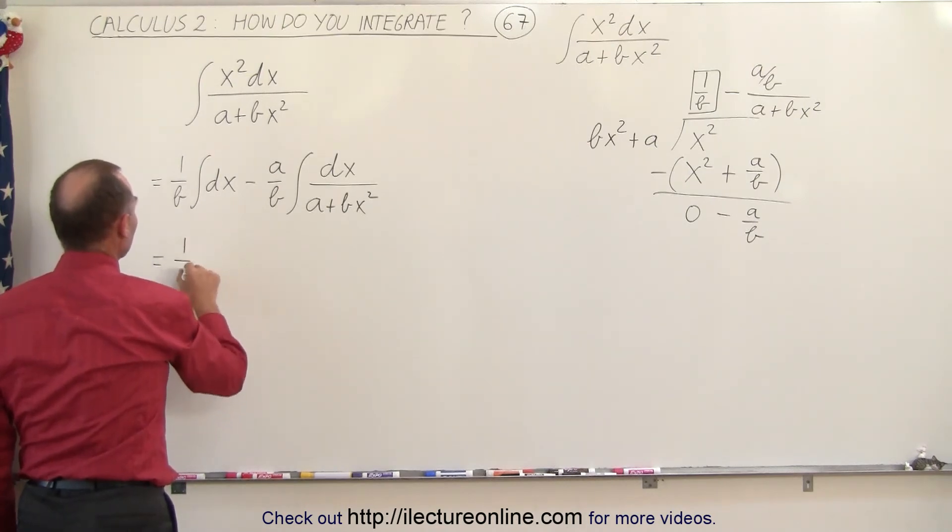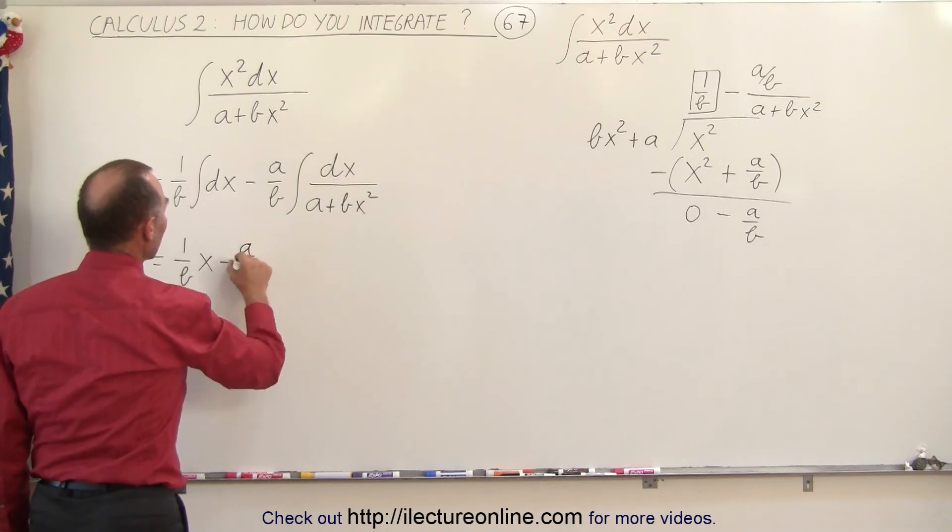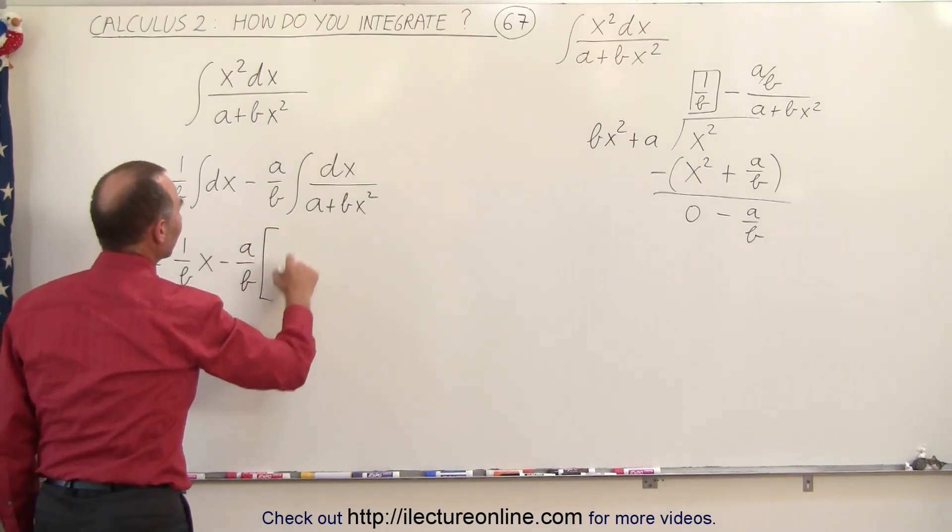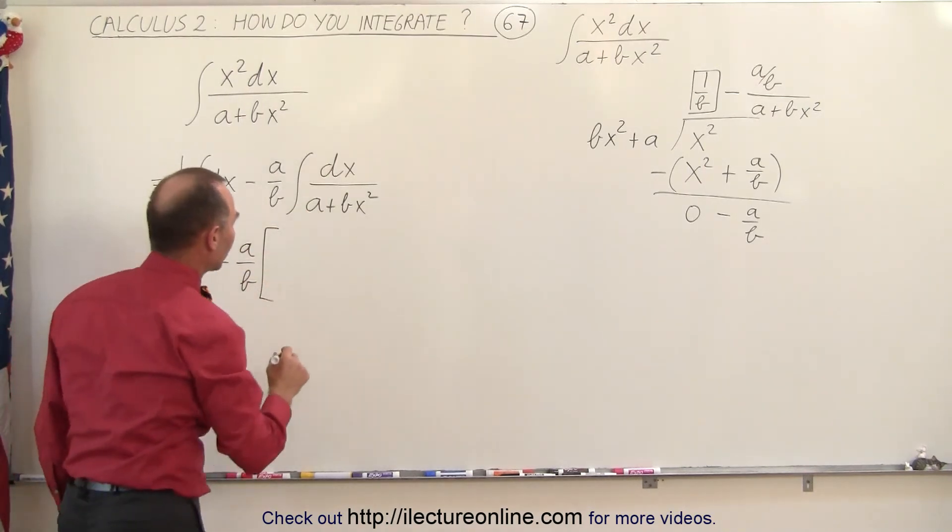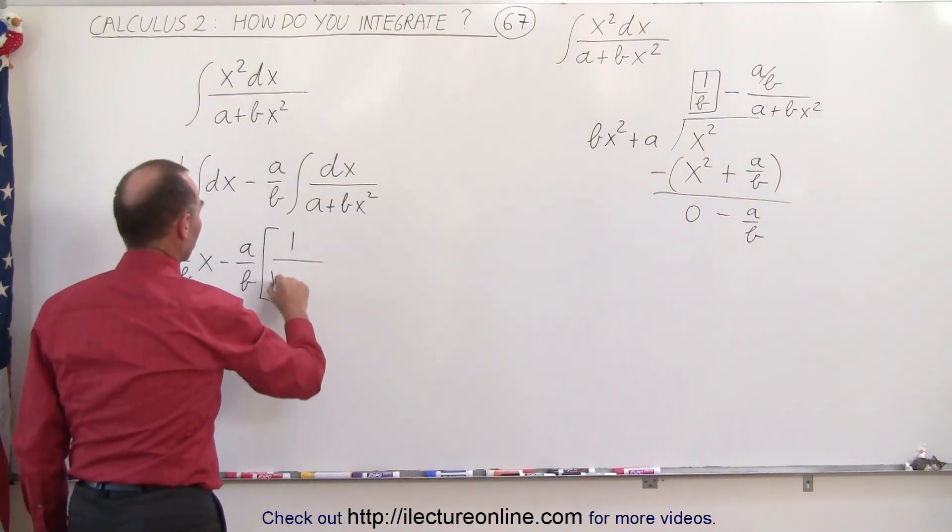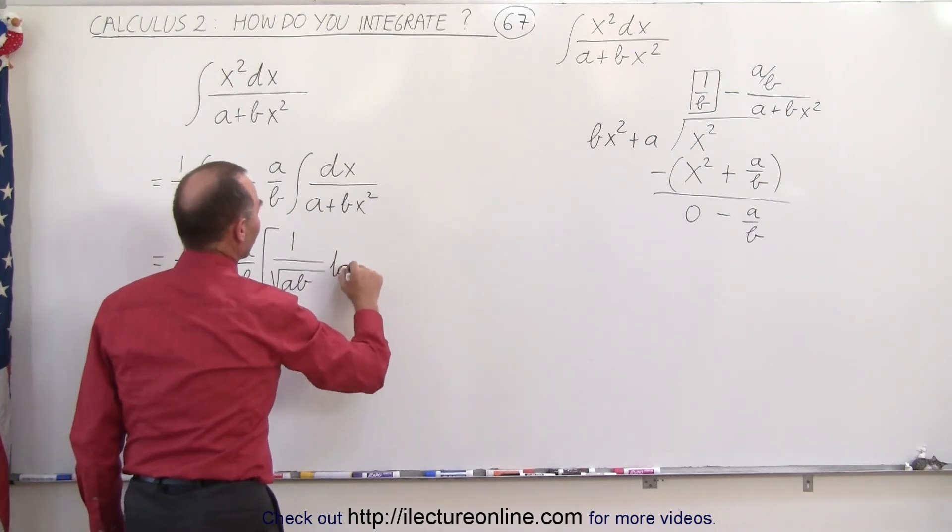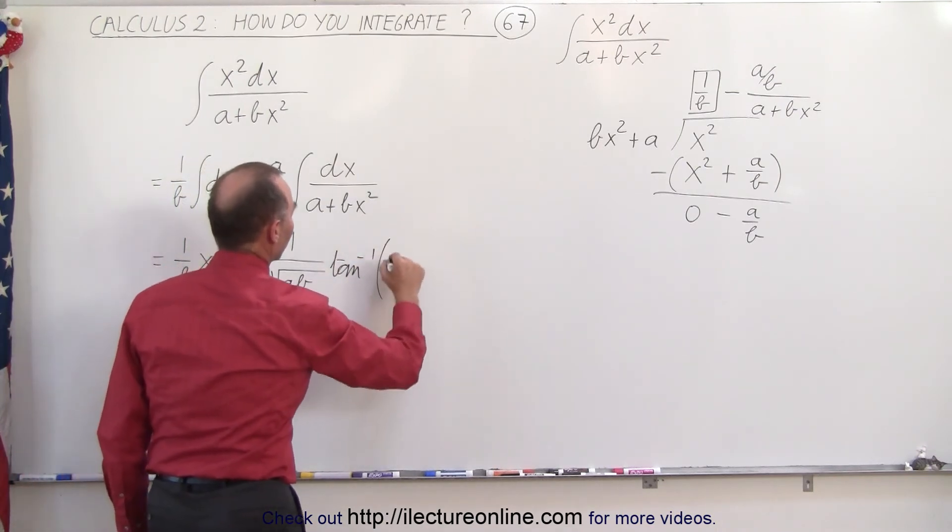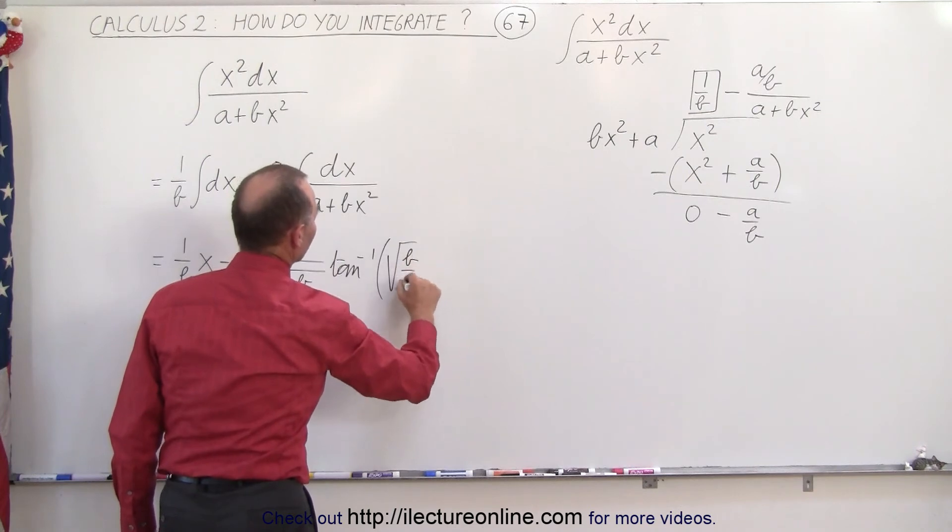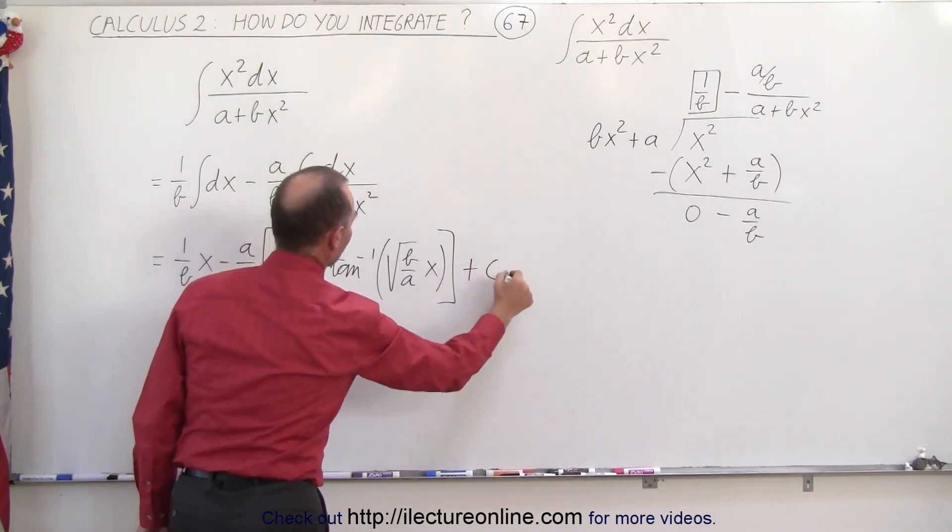So this becomes equal to 1 over b times x minus a over b times this integral. Now this integral is going to be equal to 1 over the square root of a times b times the inverse tangent of the square root of b over a times x plus a constant of integration.